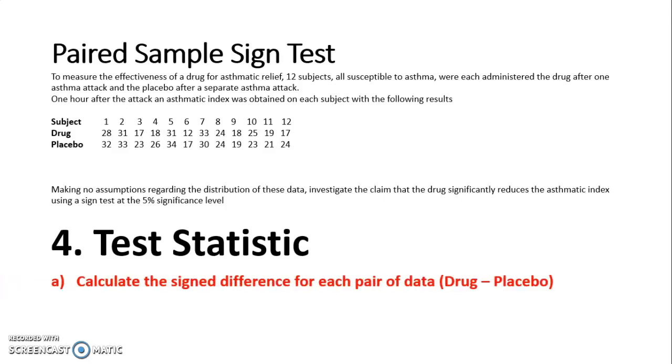So the first step is we have to calculate the signed difference for each pair of data. And I said I'm doing drug takeaway placebo. So that's going to give me my -4, -2, -6, -8, -3, -5, +3, 0, -1, +2, -2, and -7.